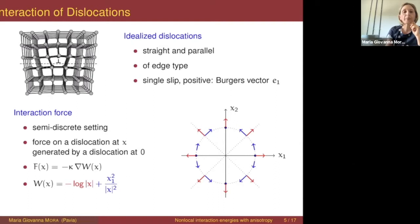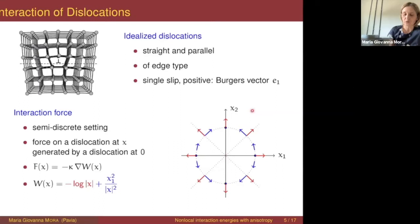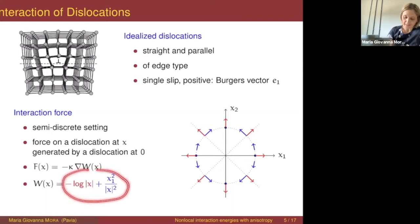Using linear elasticity as a continuum model outside the dislocations, I can compute the interaction force between two dislocations in the plane. Assuming a dislocation located at zero, I can compute the force that generates on another dislocation located at x. In this setting, the force can be written in terms of a potential W, which is exactly the kernel introduced in the previous slide.